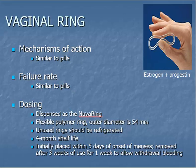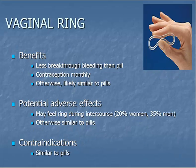The vaginal ring is a thin, flexible silicone ring placed by the patient into her vagina where it stays for three weeks. The ring is removed the fourth week to allow for menses to occur; after the fourth week is complete, a new ring is placed. It contains estrogen plus a progestin, and its mechanisms of action and failure rate are similar to oral contraceptives. Listed here are benefits, potential adverse effects, and contraindications for use of the vaginal ring.